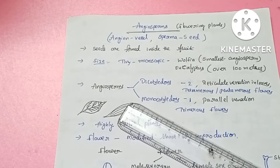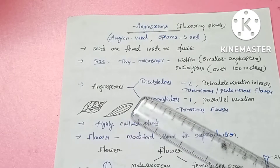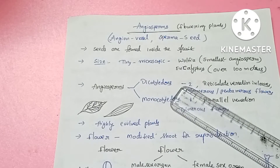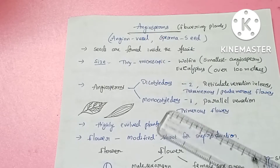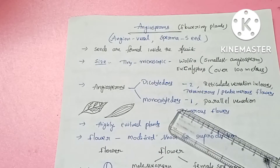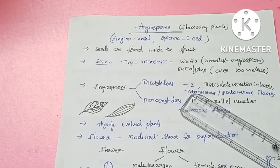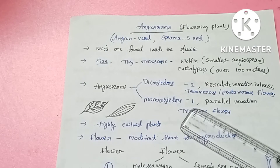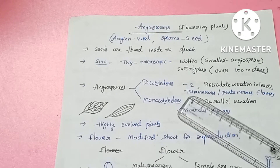Angiosperms, depending upon the cotyledon number, are divided into two types: dicotyledons and monocotyledons. In dicotyledons, there are 2 cotyledons. In monocotyledons, there is only 1 cotyledon.